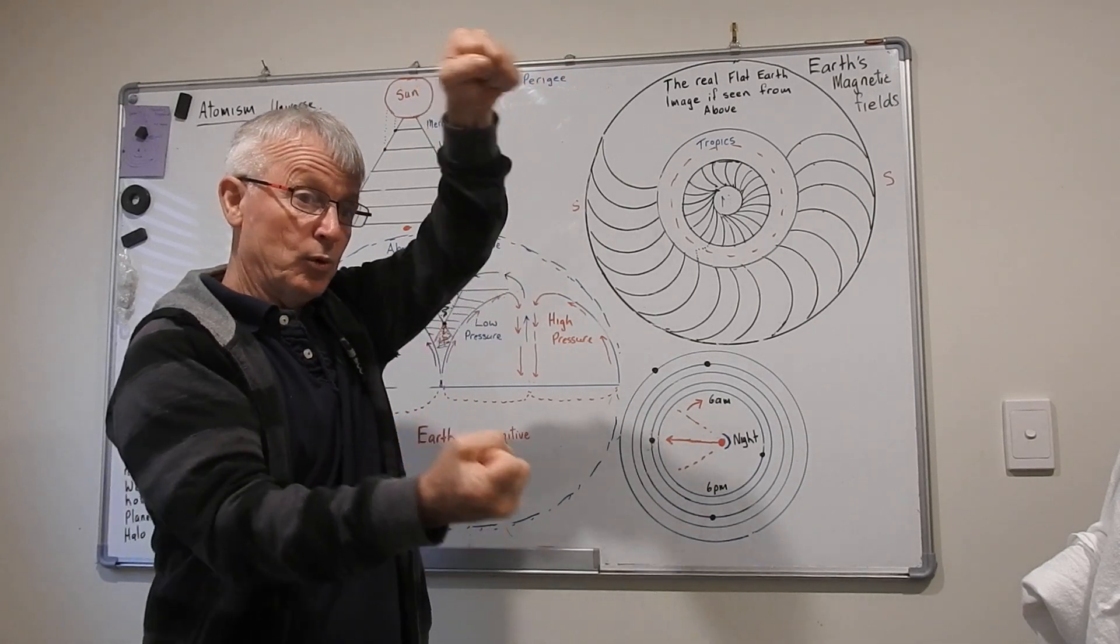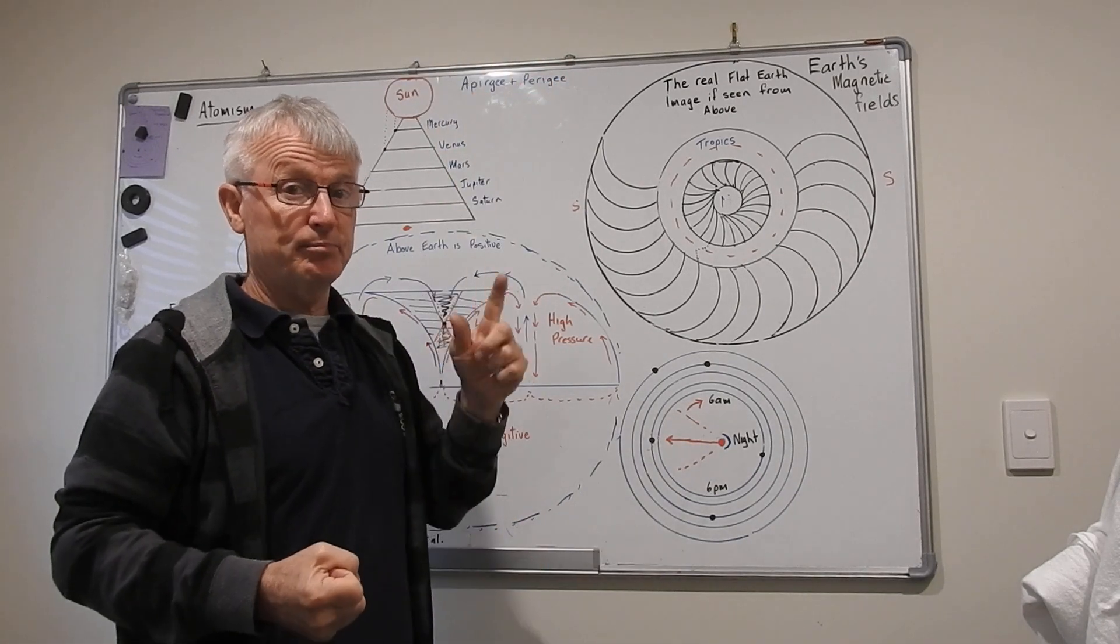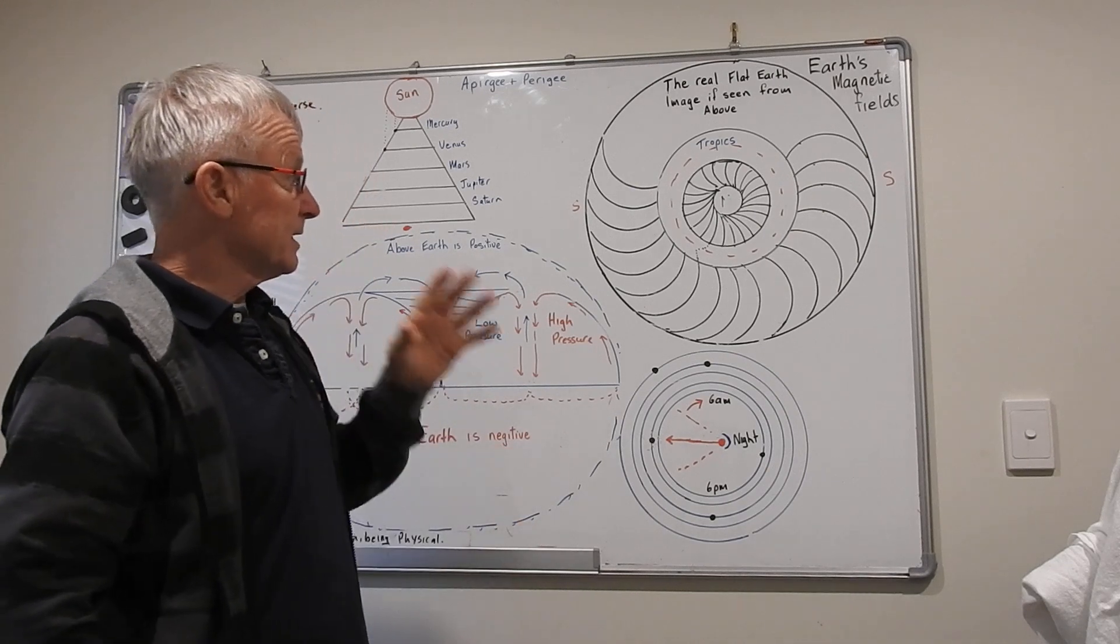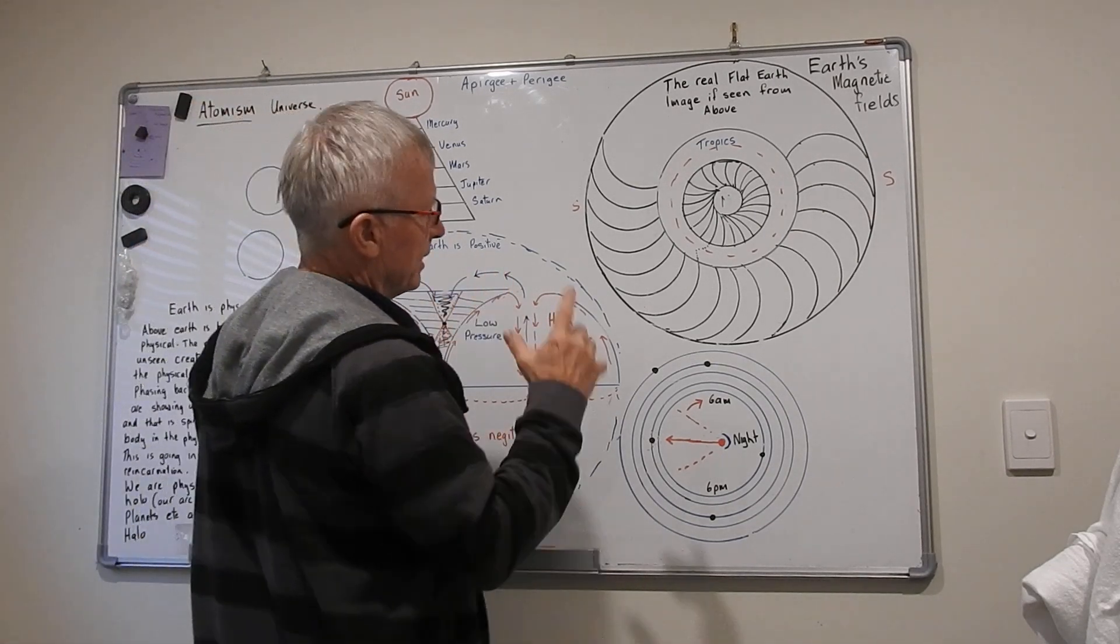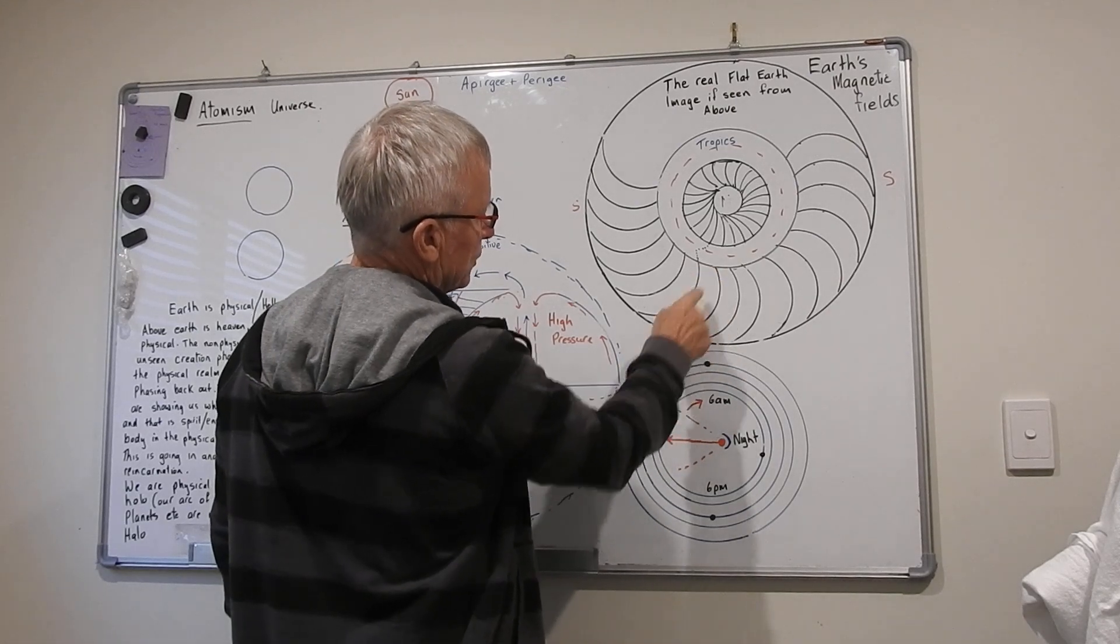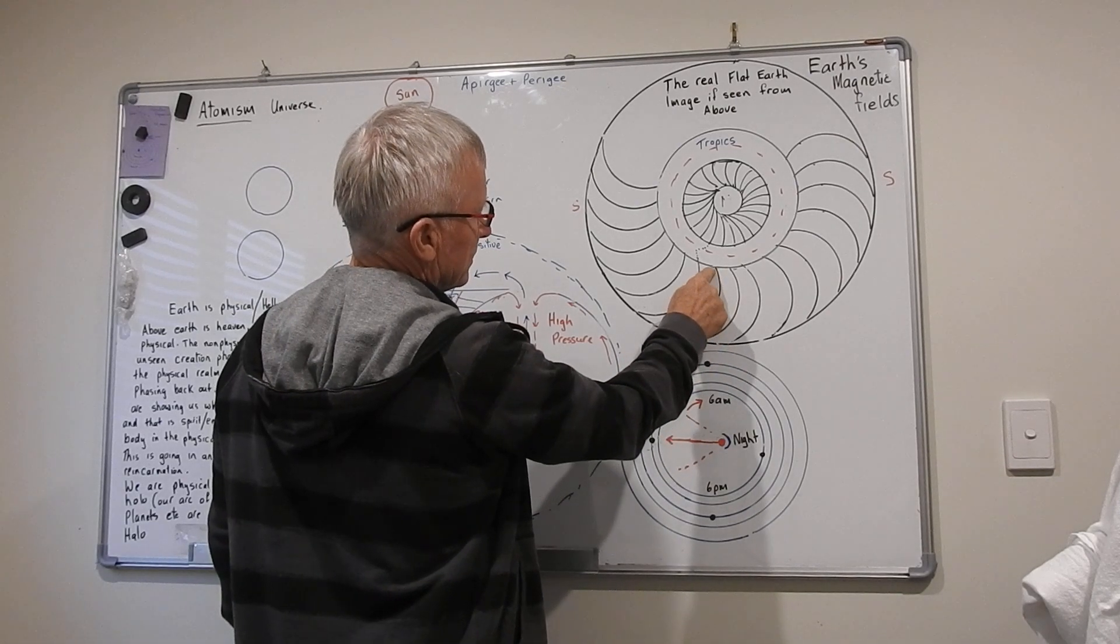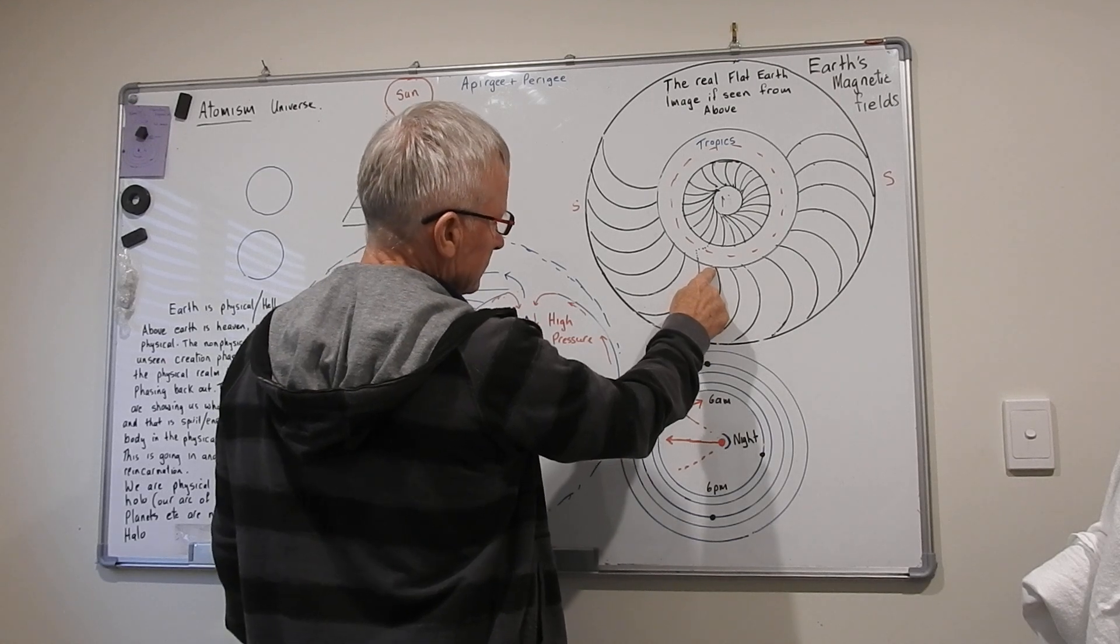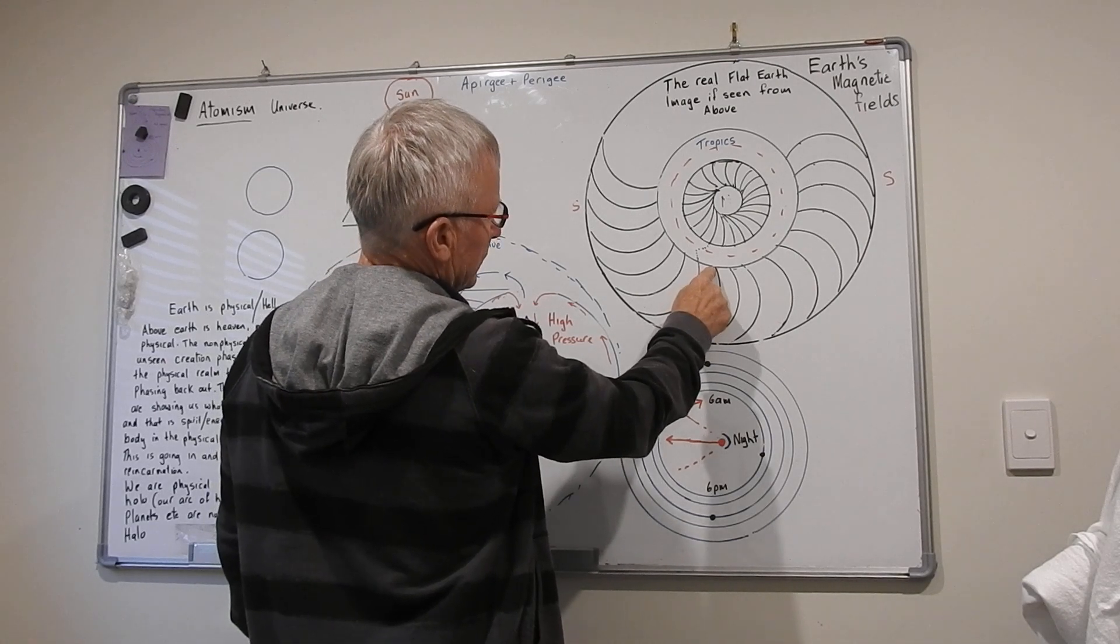There's no north and south on the top of a ball and the bottom of a ball, a spinning ball. That's absolutely 100% BS. That's not how magnet works.